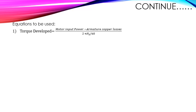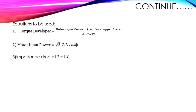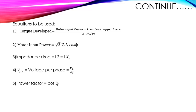We have to determine power input, power factor, and torque developed for an armature current of 250 A. Equations: torque developed = (motor input power − armature copper loss) / (2π·ns / 60). Motor input power = √3 · VL · IL · cos φ. Impedance drop = I·Xs. Phase voltage Vph = VL / √3. Power factor = cos φ. Line induced EMF EL = √3 · Eph.